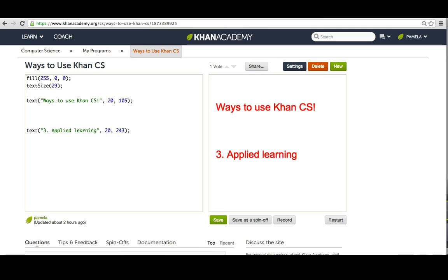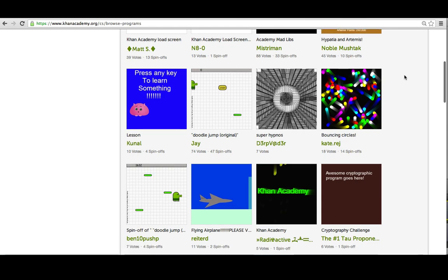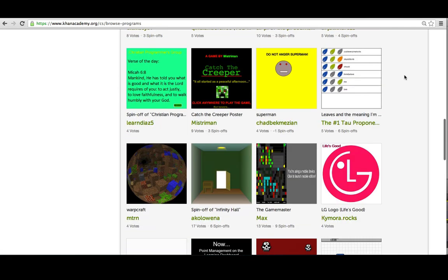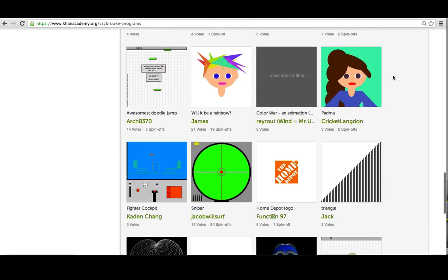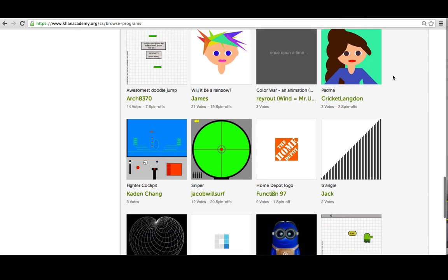You can also use Khan CS for applied learning. We have a lot of great programs that demonstrate concepts for math and science, and they're highly interactive. Even if your students don't yet understand programming, you can play with these programs to give them a different understanding of a topic, and you can even tinker with a few of the variables.